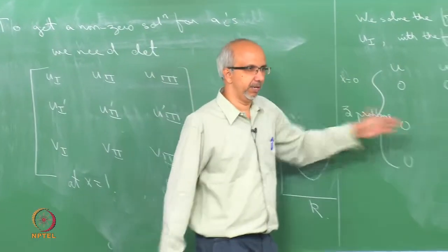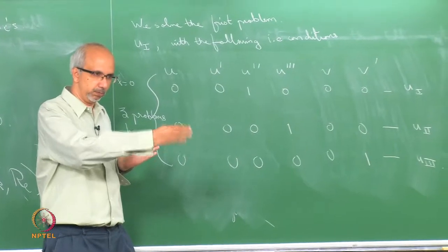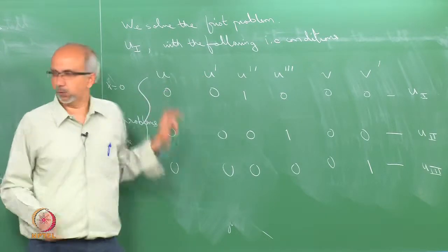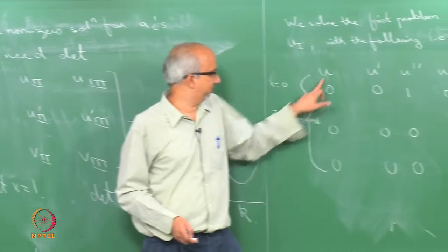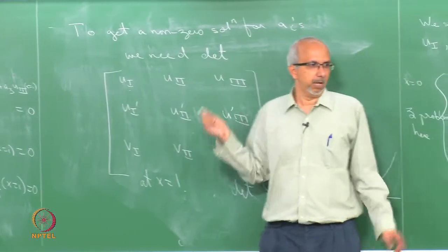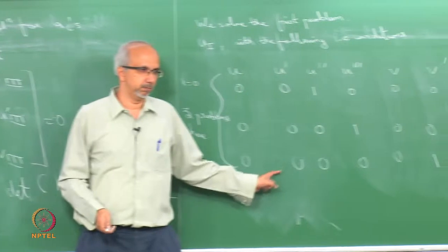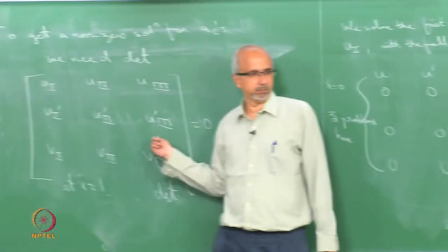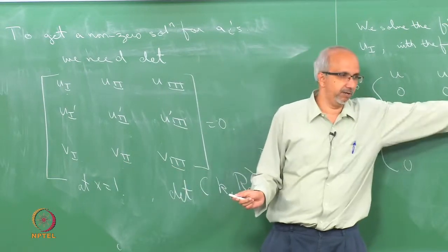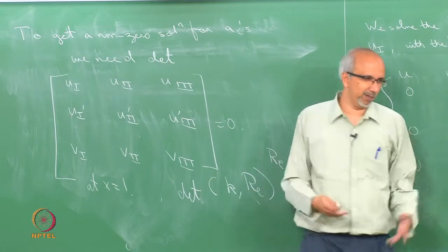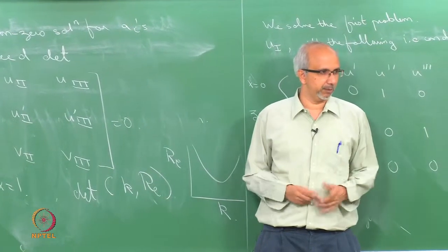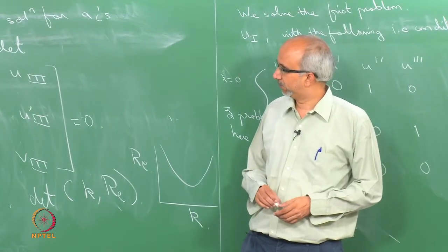Integrating from the inner wall to the outer wall, we obtain the values of all variables at the outer wall. Once the code is implemented, these steps become clear. The derivative U' corresponds to one of the six integration variables.